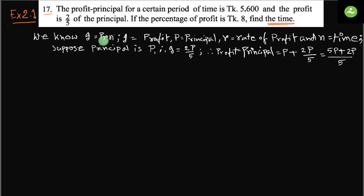In this formula there are four things: I, P, R, N. If you can put the value of three things — for example, if you know I, P, and R — you get the value of N. If you know P, R, and N, you get the value of I. So if you know any three, you get the fourth one. We already get three things: profit, principal, and the rate eight.